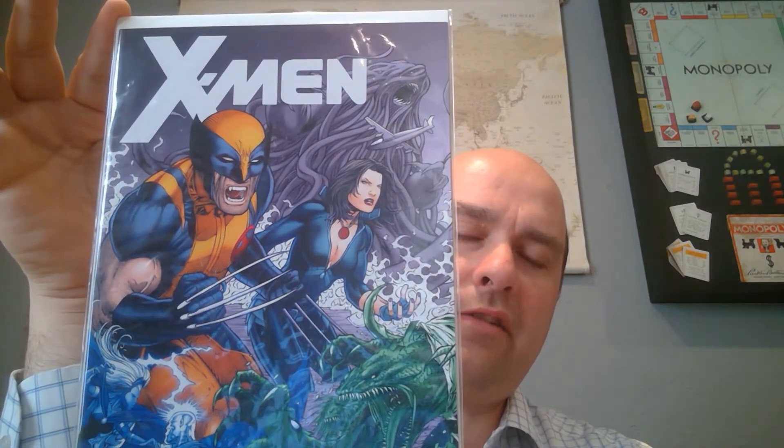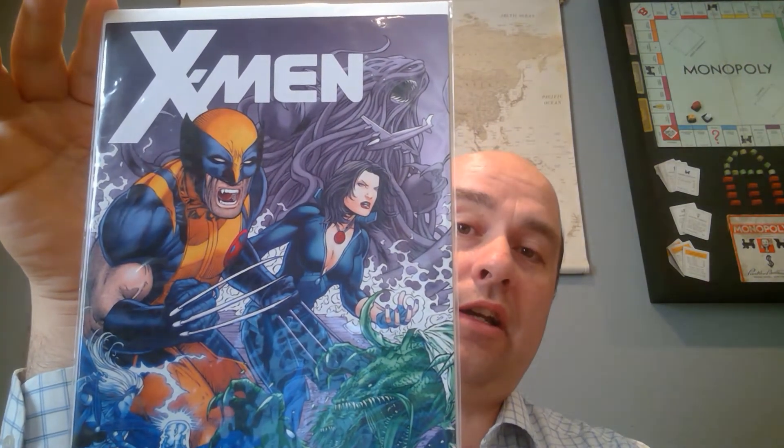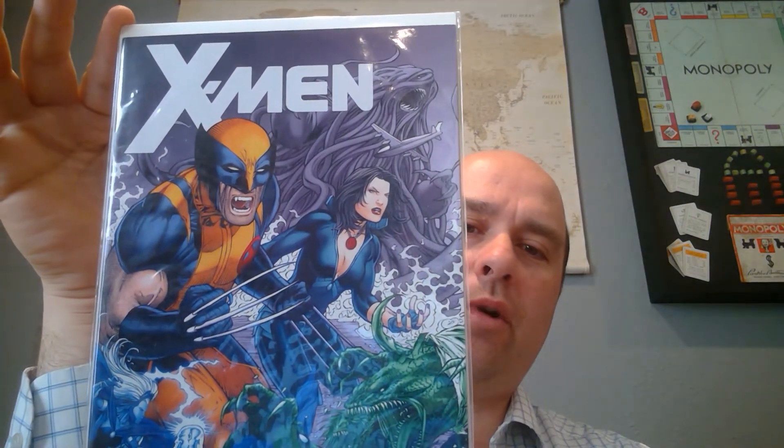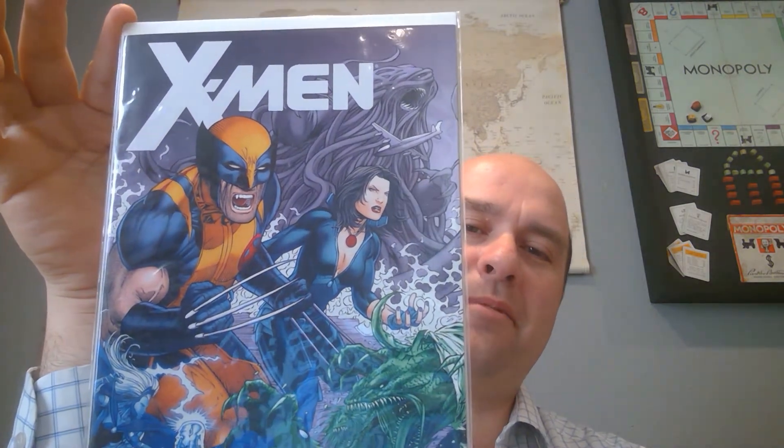X-Men number 41 variant edition. This is back when Jubilee was a vampire. They went through all that Vampire War and she finally settled in as a vampire, only to have Quentin Quire as the Phoenix Force person sacrifice the Phoenix Force to take away that vampirism. That was kind of the easy way to write it out of the script.